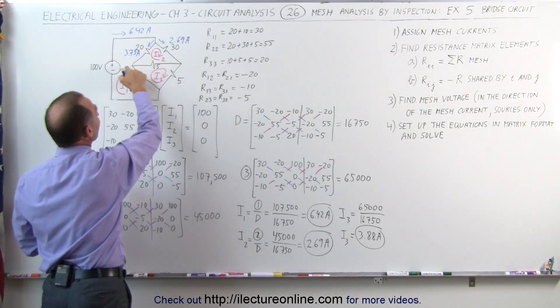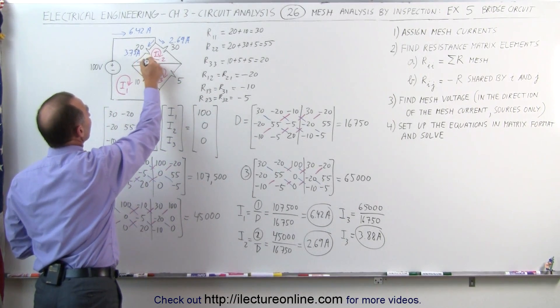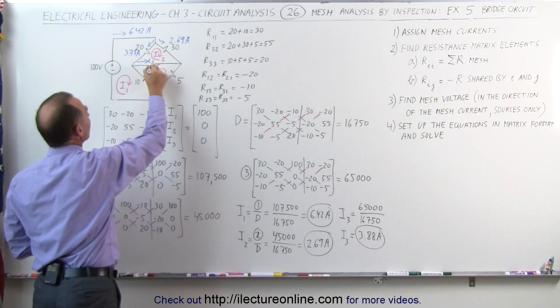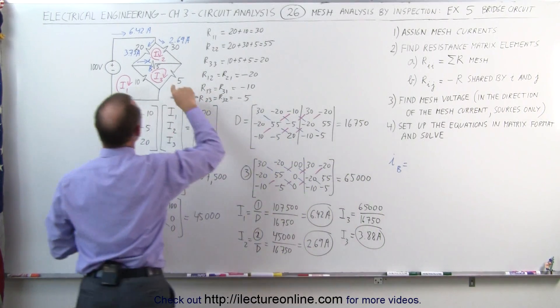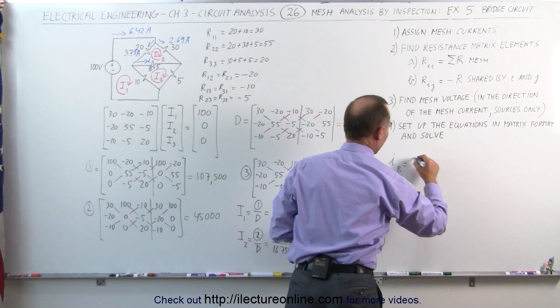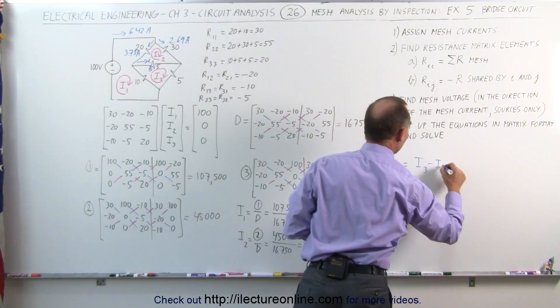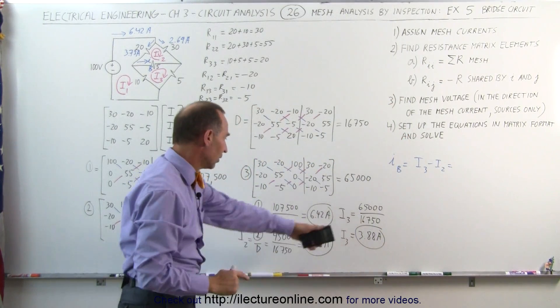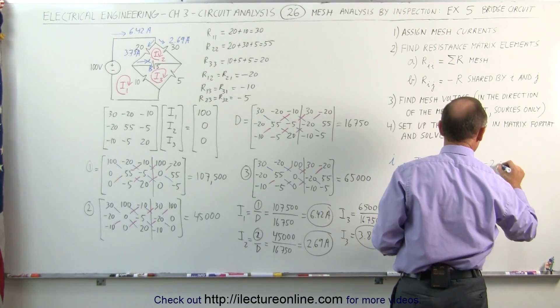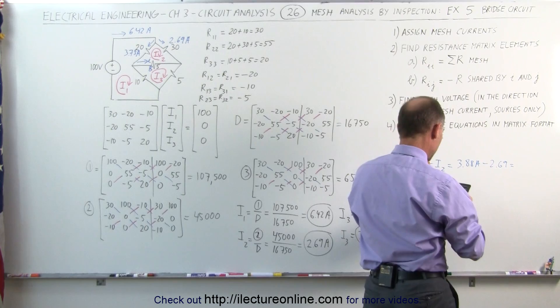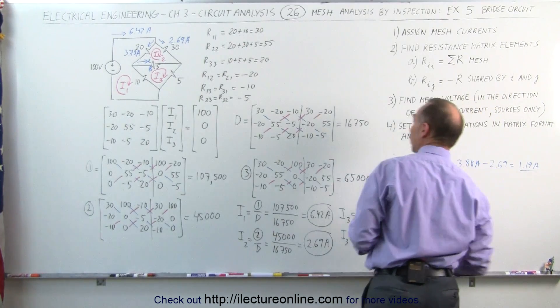What about across the bridge here from the left to the right? It's going to be, I'm going to write it as I sub B, I across the bridge. I across the bridge is equal to, notice that I3 is in the same direction, but I2 is in the opposite direction. That means it's I3 minus I2. In this case, I3 is equal to 3.88 amps and subtract from that the 2.69 amps. And so 3.88 minus 2.69 and that gives us 1.19 amps across the bridge.